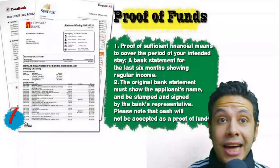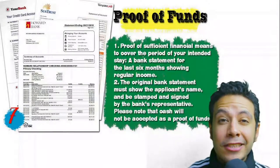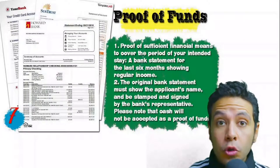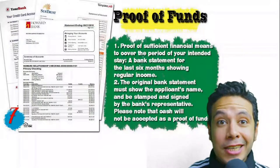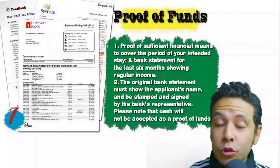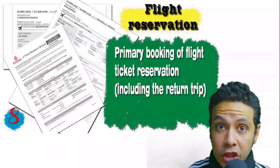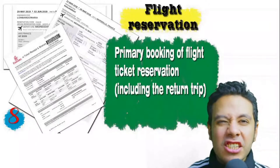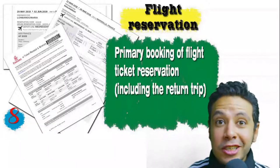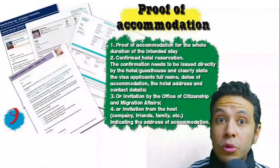In some cases, a valid residence visa for that country can also be accepted. You will need to provide proof of sufficient funds — a bank statement showing your balance for at least six months. The original bank statement must show your name and be signed and stamped by bank representatives. Remember, cash will not be accepted as proof of funds. You should also provide a flight reservation; it can be an initial booking, but in some cases a confirmed booking with a return ticket is required.